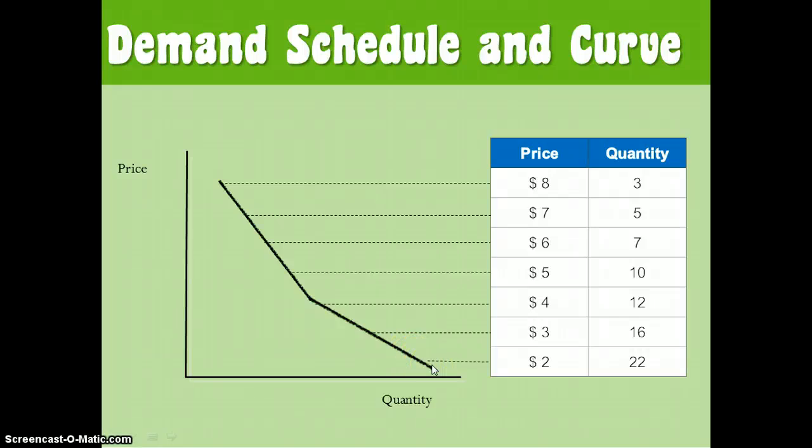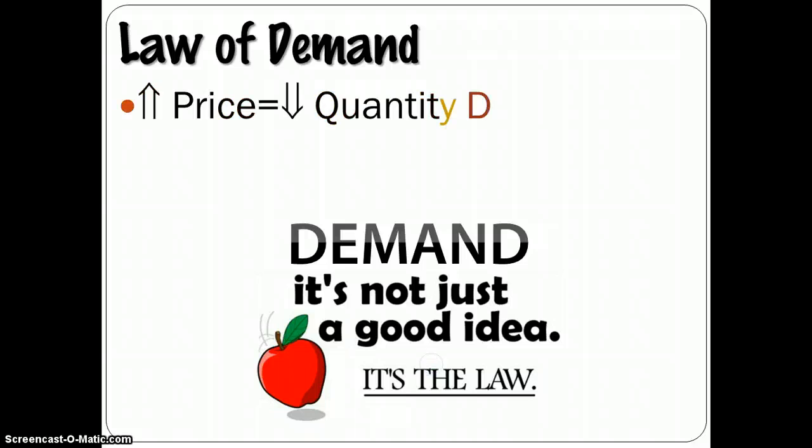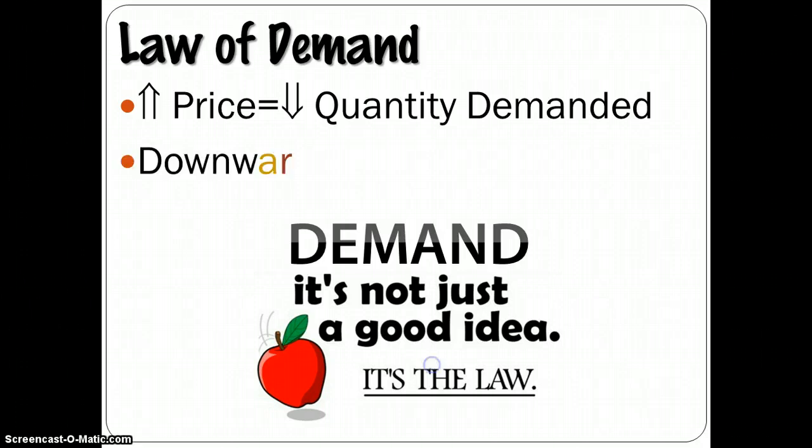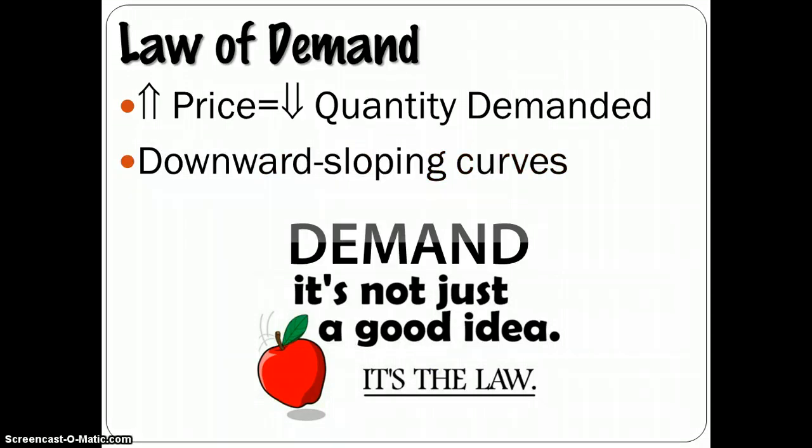And that demand curve is always going to be downward sloping, and the cause of it is because of what's known as the law of demand. That as prices rise, the quantity demanded drops. And it's called a law because that's reality. It is what it is, that if prices are higher, people want less of every good. And so a downward sloping demand curve is created.